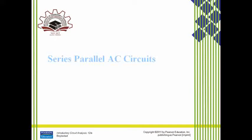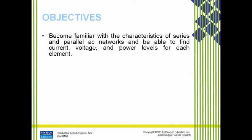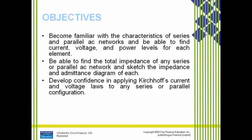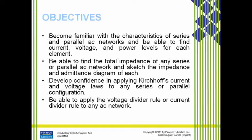Chapter 15: Series and Parallel AC Networks. The listed objectives are: become familiar with the characteristics of series and parallel AC networks and be able to find the current, voltage and power levels for each element — resistor, capacitor and inductor — as we have done for DC networks. Be able to find the total impedance of any series or parallel AC network, and sketch the impedance and admittance diagram of each.